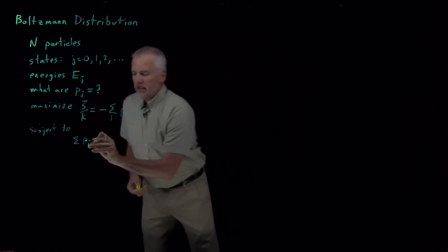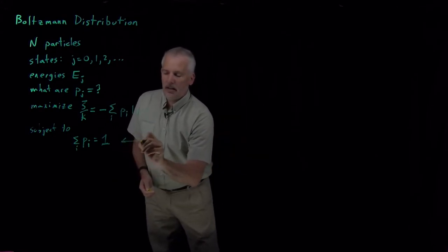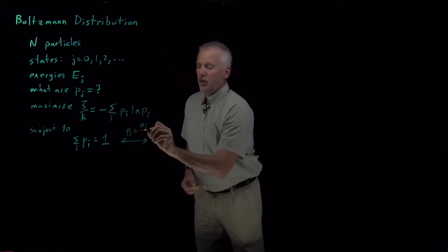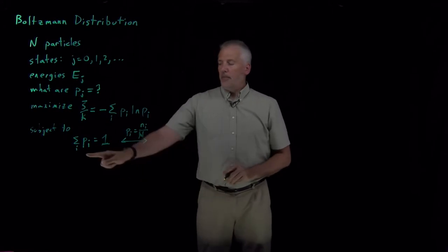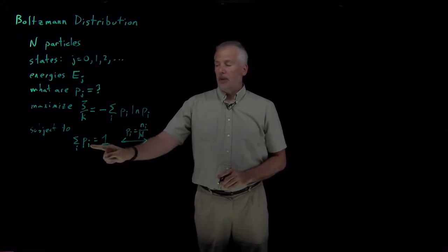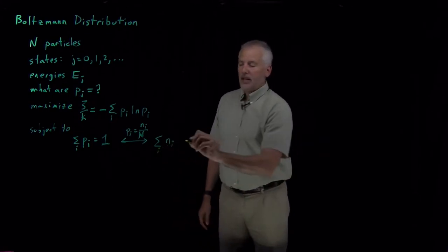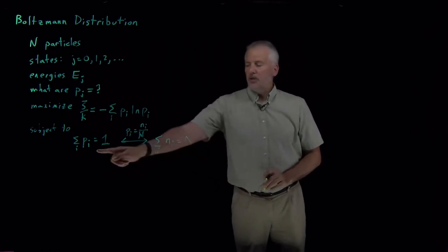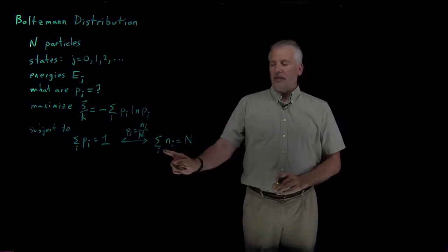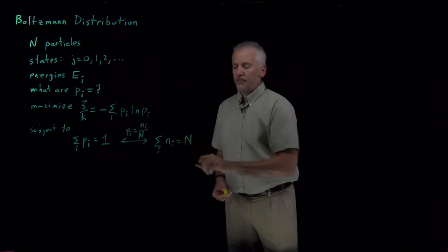That's equivalent to saying: sum up all the probabilities and they add up to 1. Because probabilities are the same as occupation numbers divided by the total number of molecules, if I multiply this equation by N, that's like saying if I add up the number of molecules in each state, that has to give me the total number of molecules. So those two constraints are equivalent — saying all the probabilities add up to 100% is equivalent to saying the occupation numbers sum to the total number of molecules.